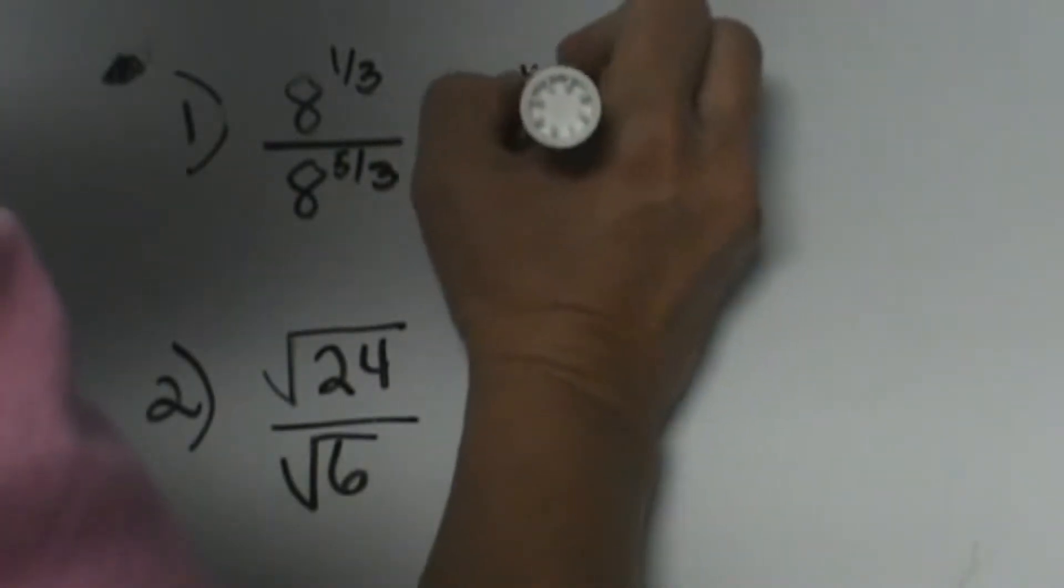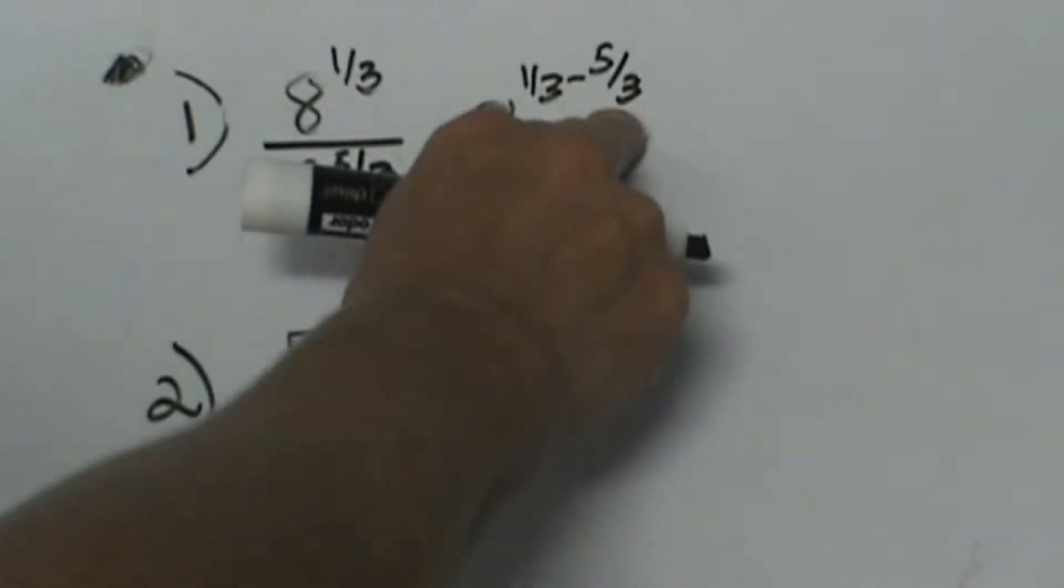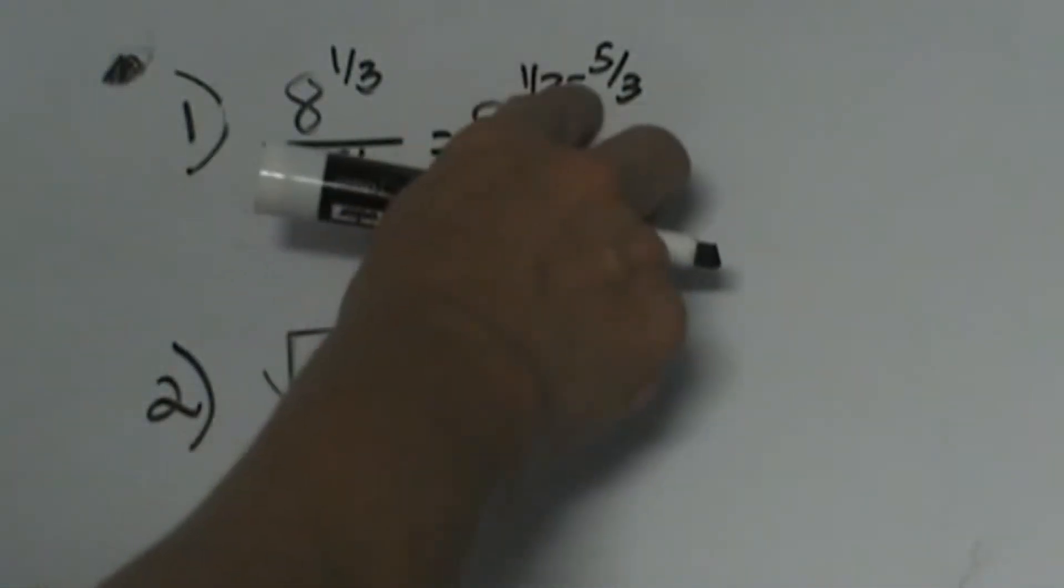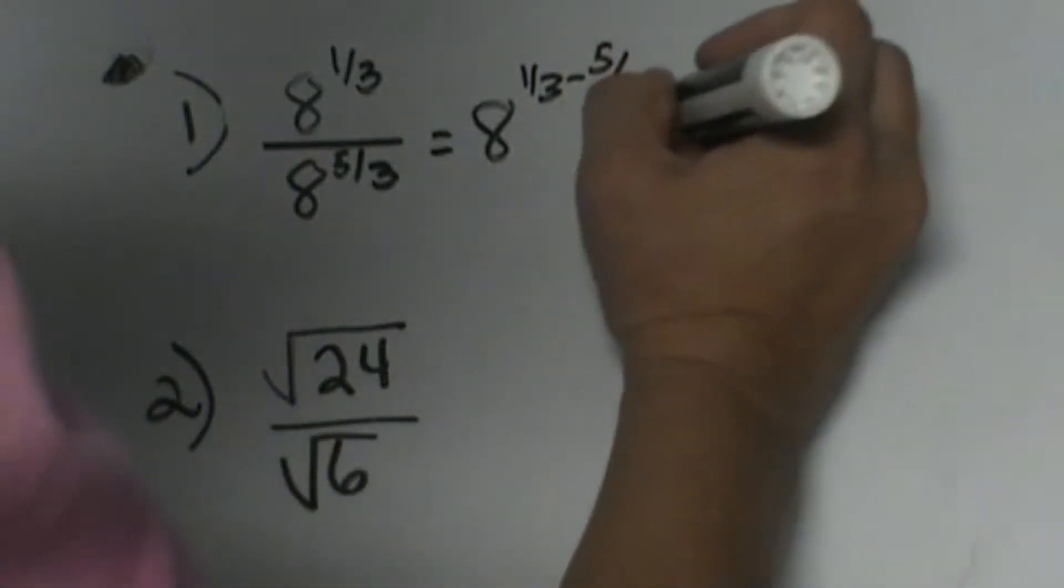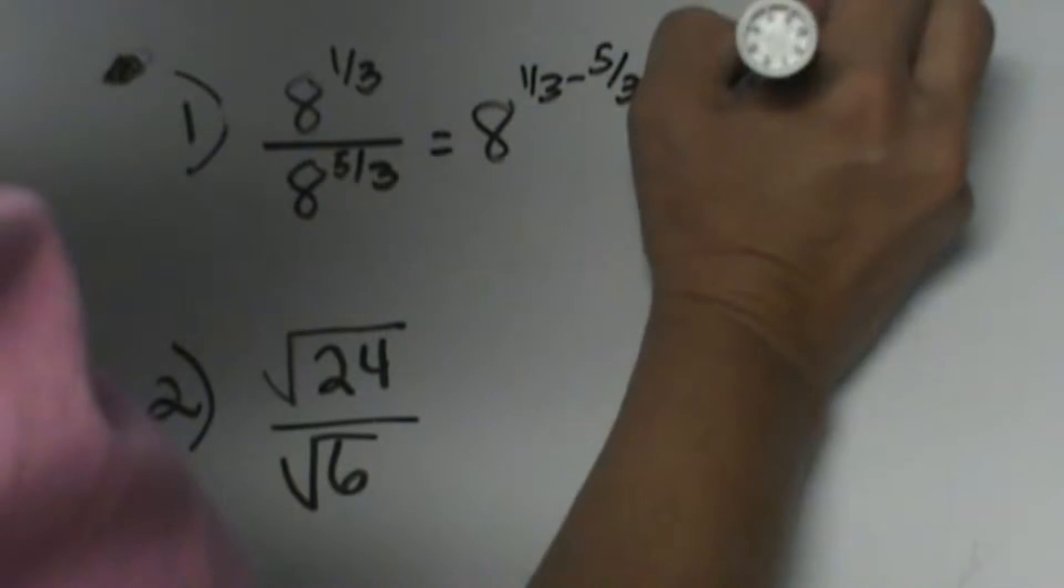8 to the 1/3 minus 5/3. Since these have like denominators, there's nothing extra I have to do. I can just subtract: 1 minus 5 is negative 4. That's going to give me 8 to the negative 4/3 power.